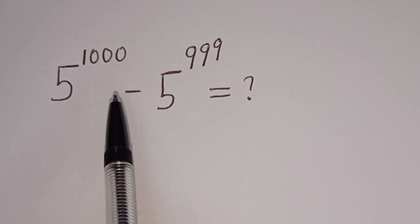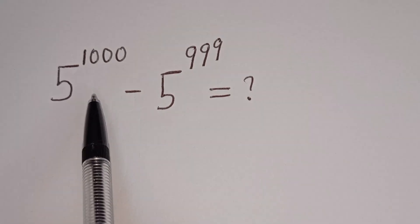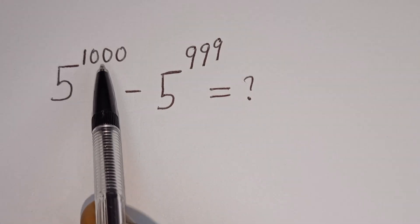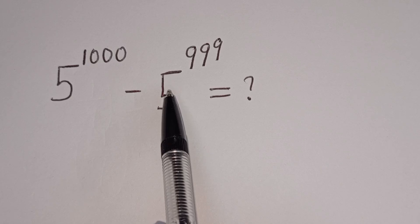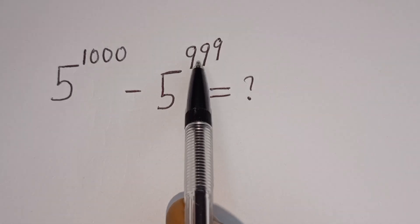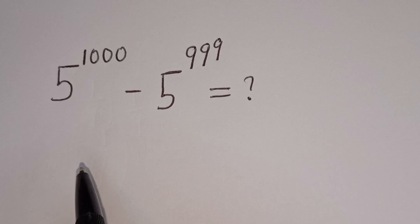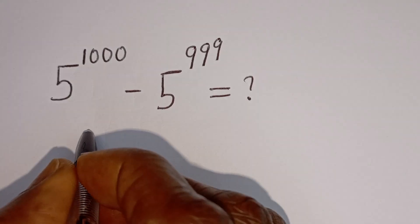Hello. How to simplify this nice math problem without using a calculator: 5 to the power of 1000 minus 5 to the power of 999. Solution.